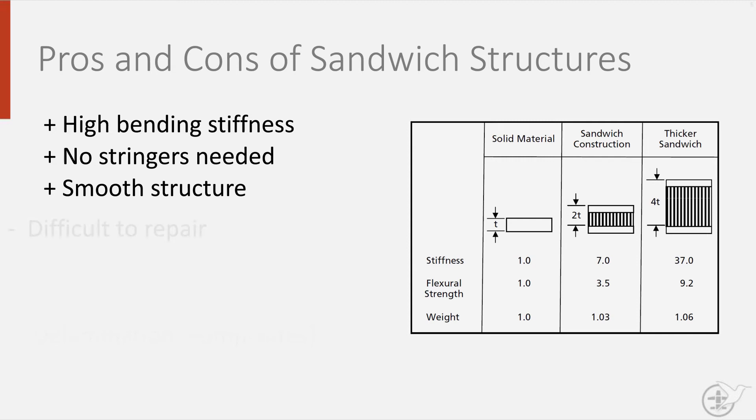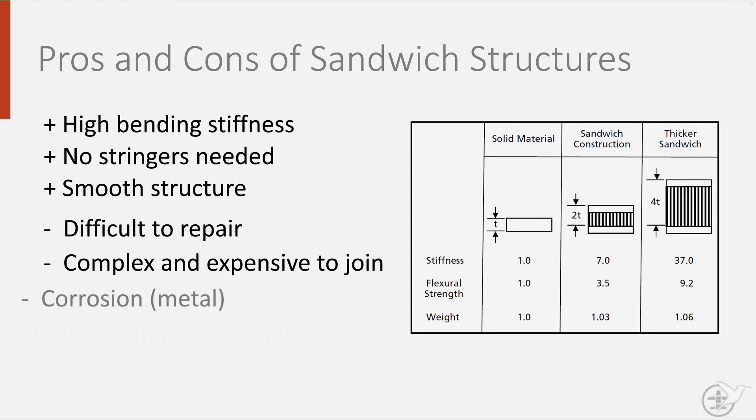The downsides are that the structures are difficult to repair. Also, joining them to other structural elements is not easy, because many traditional bonding methods, such as riveting and bolts, are not possible. They also suffer from corrosion in metal-based sandwich structures and delamination in composites. They tend to absorb moisture, which does affect their durability.